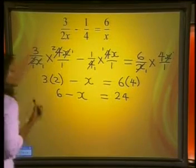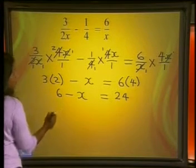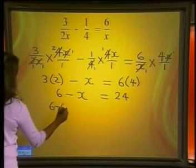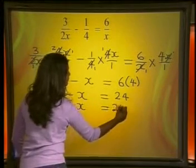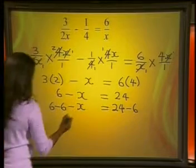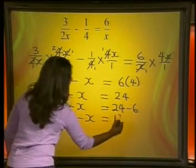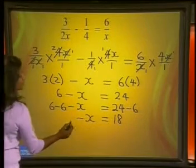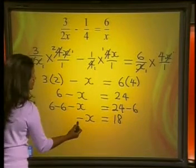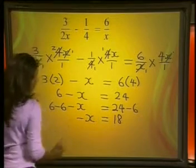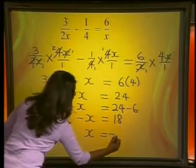Now we want to solve for x. I'm going to subtract 6 from both sides of the equation. I get 6 minus 6 minus x is equal to 24 minus 6. We're left with minus x is equal to 18. Remember, we are solving for positive x, which means I need to divide both sides by negative 1. I get x is equal to negative 18.